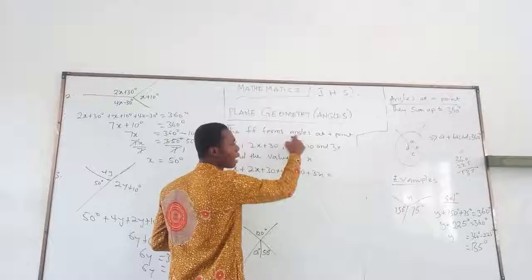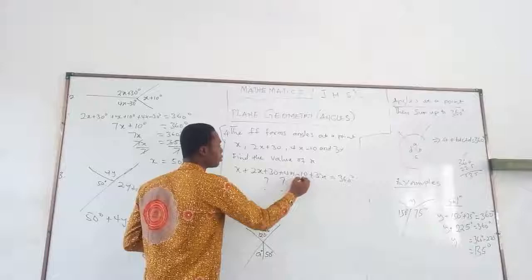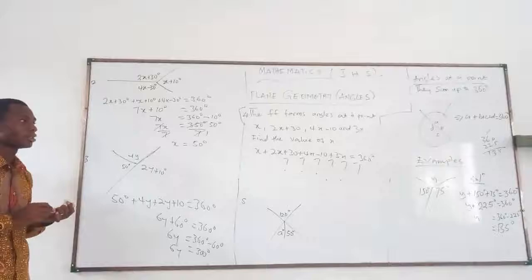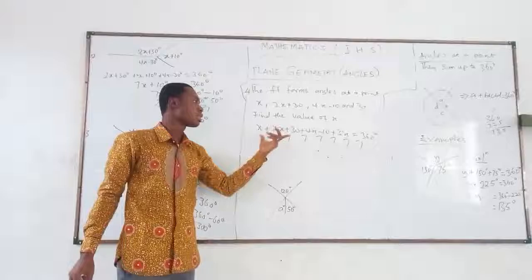If you follow the correct process, I know and trust you will get the correct answer. Sum the variables, sum the numbers, group like terms. If there are coefficients, divide by the coefficients and you get it.